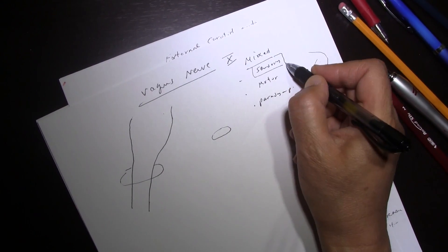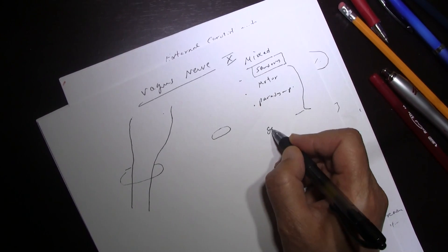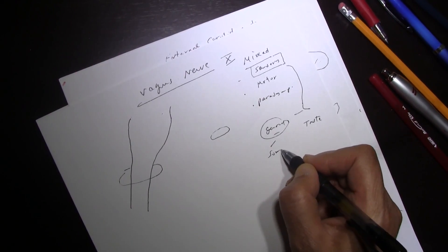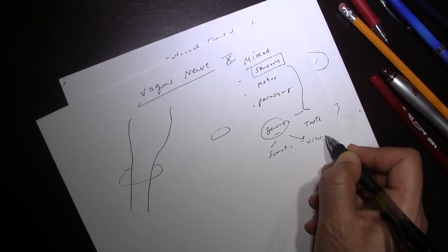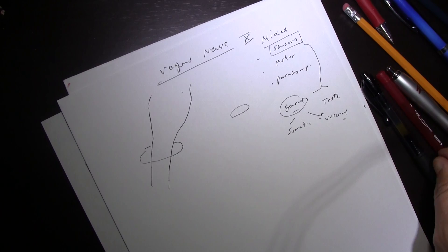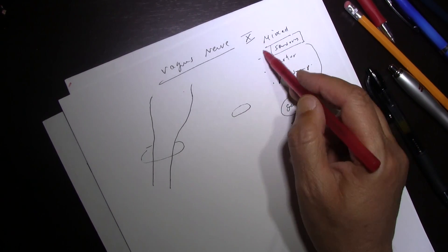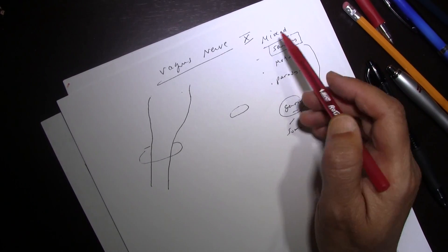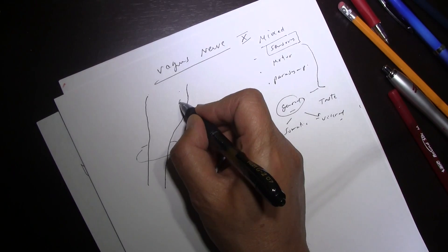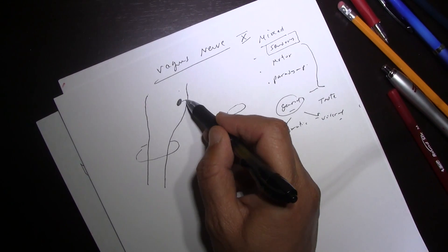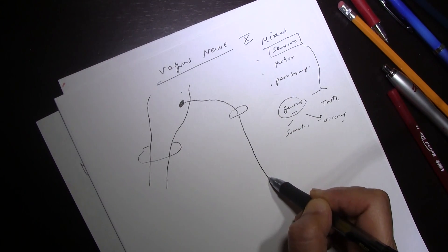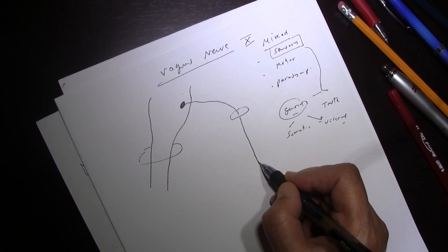When it comes to sensory fibers, we have two kinds of sensation: general somatic and general visceral — from the skin and tissues. Since the vagus nerve has multiple different kinds of fibers, it has different kinds of nuclei. The motor nucleus is the nucleus ambiguus, which sends out the motor fibers.